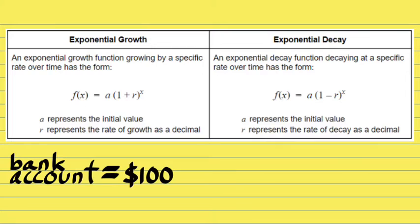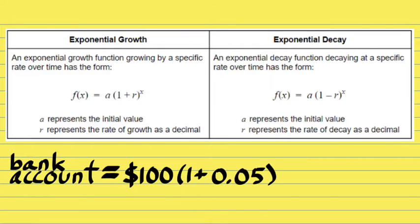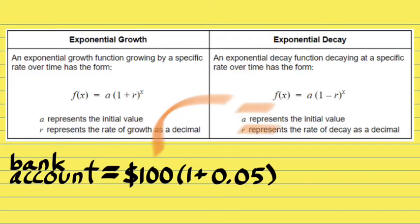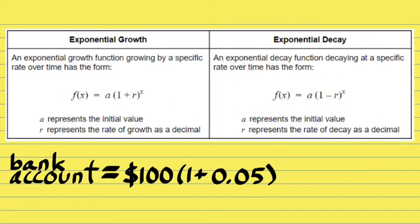Let's do a quick example. Let's say you're starting off with $100 in the bank as your initial value, so A is $100. Let's say you're investing money and getting a 5% return. The value of R is 0.05. X is going to represent the amount of years that you would be having your money invested, or the duration the exponential growth function would be occurring.